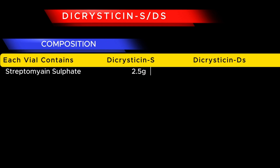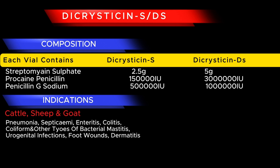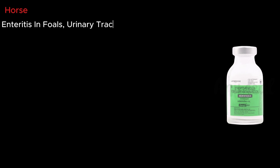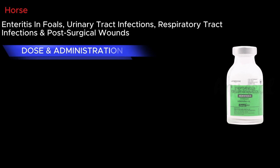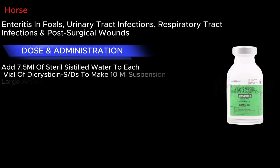Dicrysticin — indications for cattle, sheep, and goat: pneumonia, septicemia, enteritis, colitis, coliform and other types of bacterial mastitis, urogenital infections, foot wounds, and dermatitis. For dogs and cats: enteritis, dermatitis, ear infections, respiratory tract infections, post-surgical infections, and urogenital infections. Also indicated for enteritis in foals, urinary tract infections, respiratory tract infections, and post-surgical wounds. Dosage: add 7.5 ml of sterile distilled water to each vial to make 10 ml suspension; large animals 1 ml per 50 kg, small animals 1 ml per 5 kg.